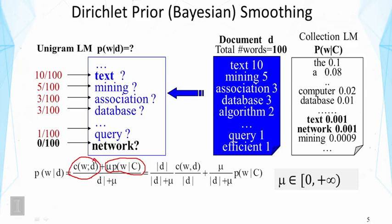As a result, in total, we would have added this many pseudo counts. Why? Because if you take a sum of this over all the words, then we see the probability of the words would sum to one and that gives us just mu. So this is the total number of pseudo counts that we added. And so these probabilities would still sum to one.